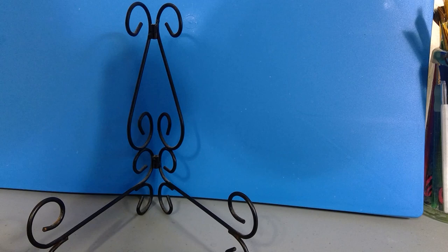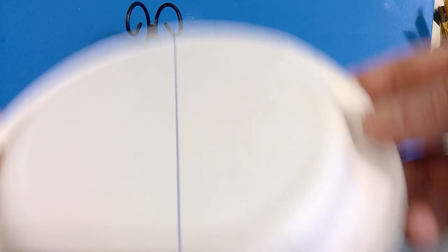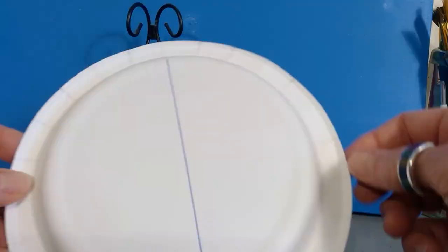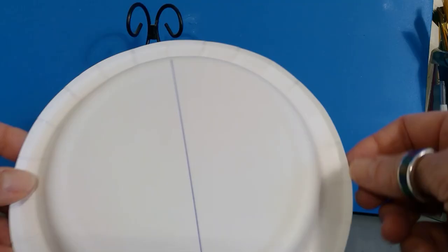So first things first, what you need to do is find something that's a circle or you can actually make a circle on your paper with something. I chose this paper plate.